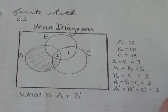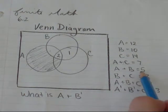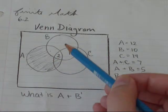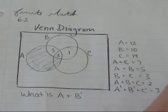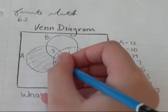And then A and B, A plus B equals 5, so this whole part equals 5. I already have 2 from the center, so that gives me 3. And then A and C is 7, 7 minus 2 is 5.